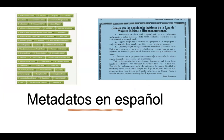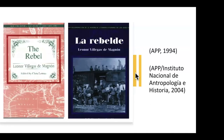The team enters, corrects, and rethinks how descriptions are made, working with headings in both English and Spanish, and offering keyword lists to ensure these materials can be found and easily discovered. One example of this work is the file of 'The Rebel' by Leonor Villegas de Magnón.